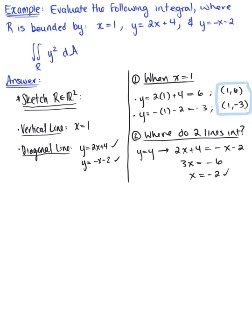We can plug x equals negative 2 into either equation to find the y coordinate of the intersection point. So y equals minus negative 2 minus 2, which gives us 0. So we have a third intersection point at negative 2, 0.